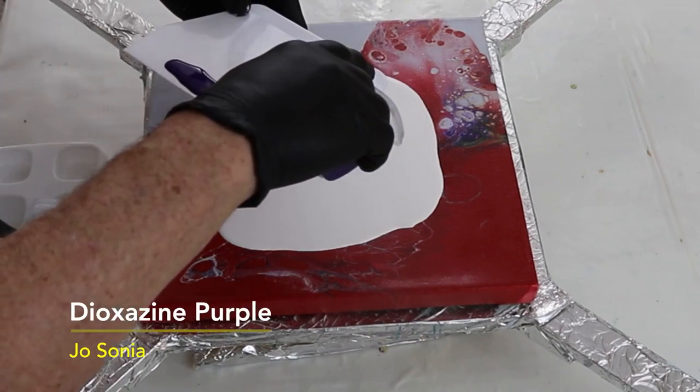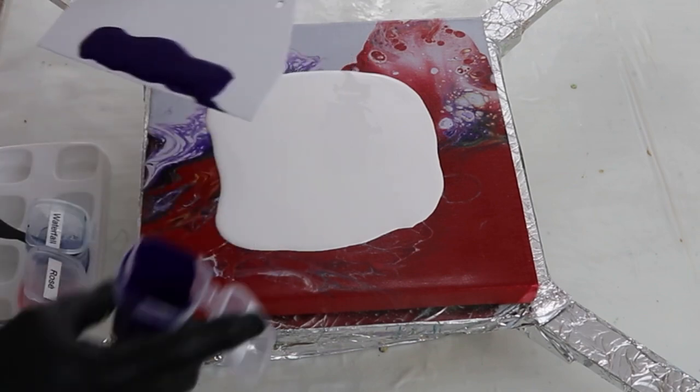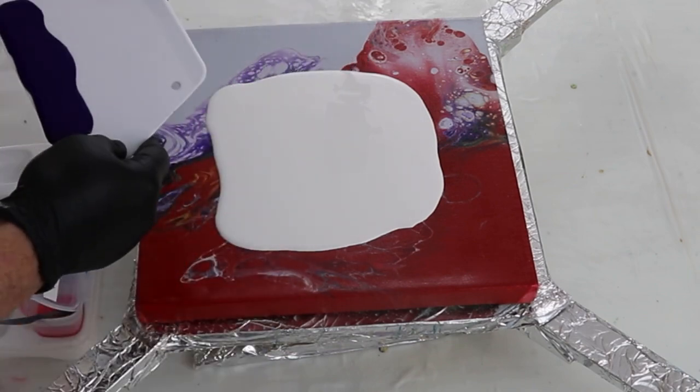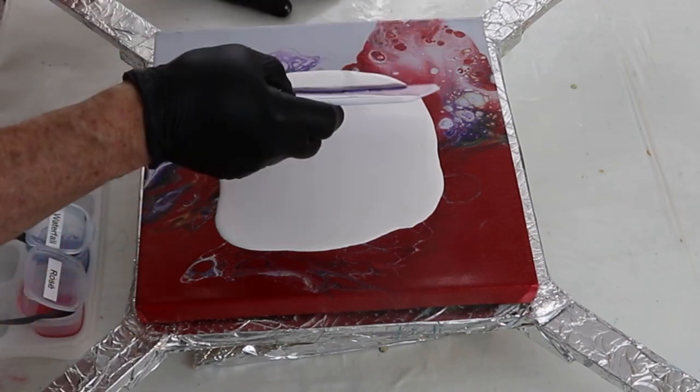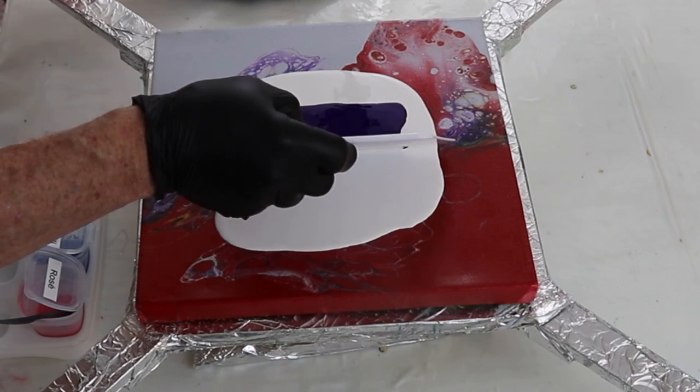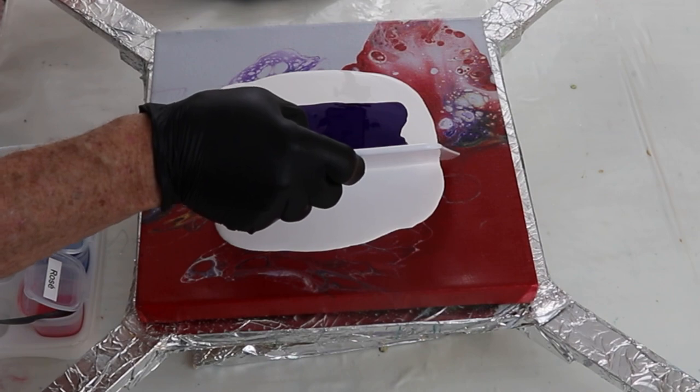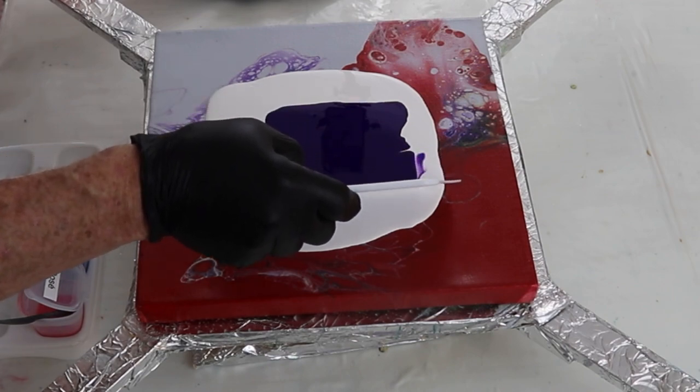I've got my swiping tool and I'm putting down a swath of dioxazine purple. This is a Josonia product, highly pigmented paint. I'm just going to get a nice thin layer. Don't really want it very thick at all. Just want it nice and thin so I can spread across. You'll see what I'm going to do with it in just a minute.